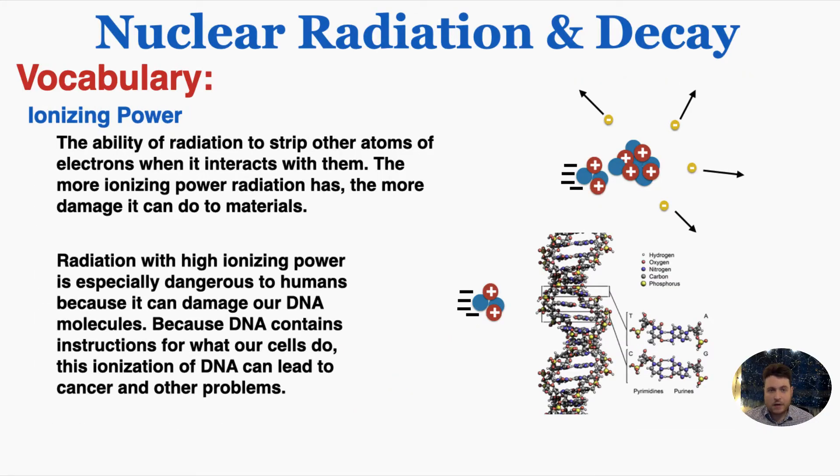Another term you'll need to know is ionizing power. This is the ability of radiation to strip other atoms of electrons when it interacts with them. The more ionizing power radiation has, the more damage it can do to materials. Radiation with high ionizing power is especially dangerous to humans because it can damage our DNA molecules. Because DNA contains instructions for what our cells do, this ionization of DNA can lead to cancer and other problems. This is the reason nuclear radiation is dangerous to humans.